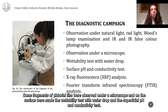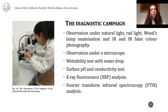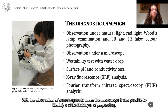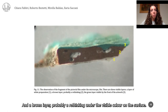Some fragments of pictorial film were observed under a microscope, and on the surface the wettability test with water drop and the superficial pH and conductivity test were made. In addition, X-ray fluorescence (XRF) and Fourier transform infrared spectroscopy (FTIR) were performed to identify the binder. Under the microscope, it was possible to identify a white first layer of preparation and a brown layer, probably a hardening layer, under the visible color on the surface.